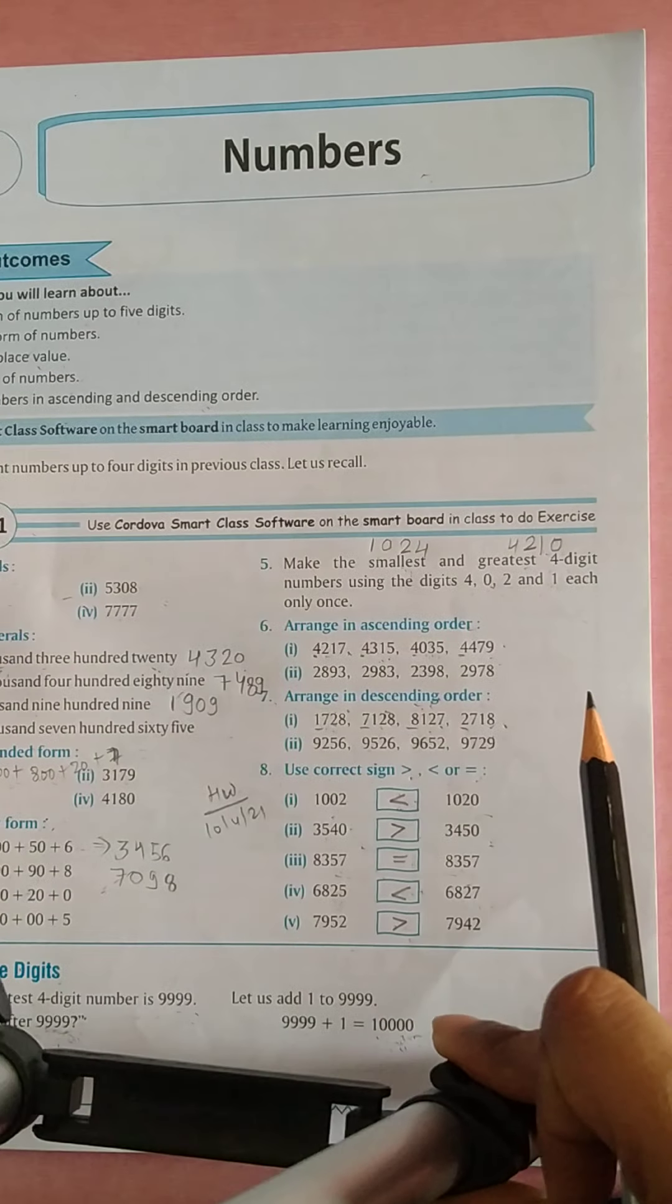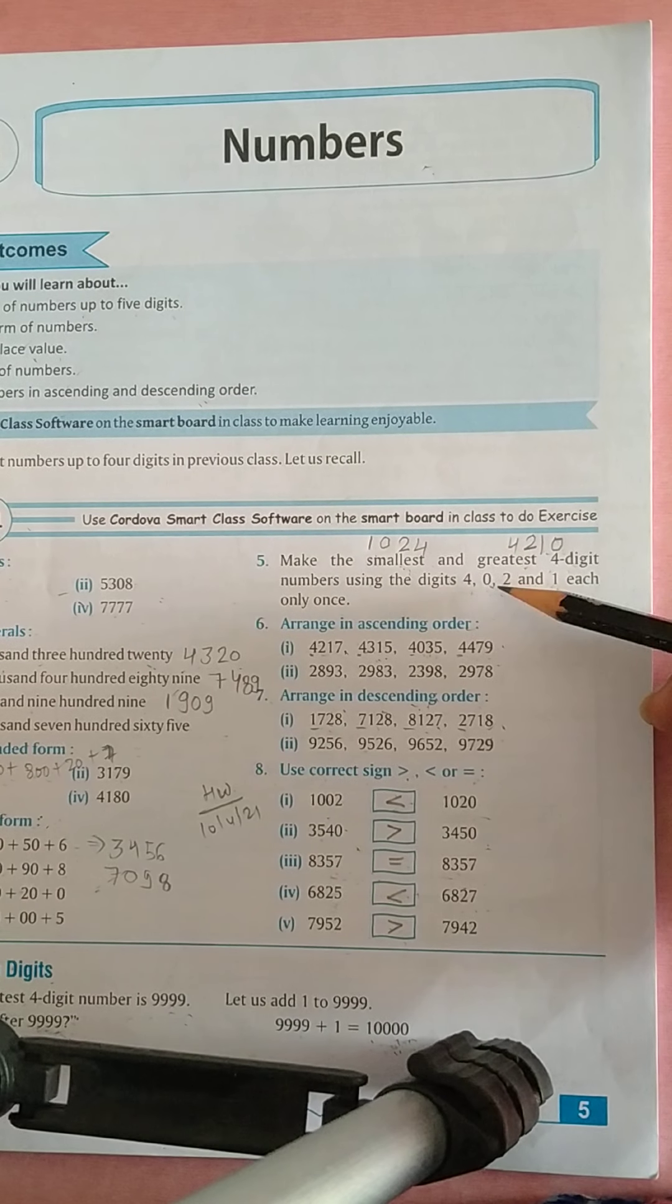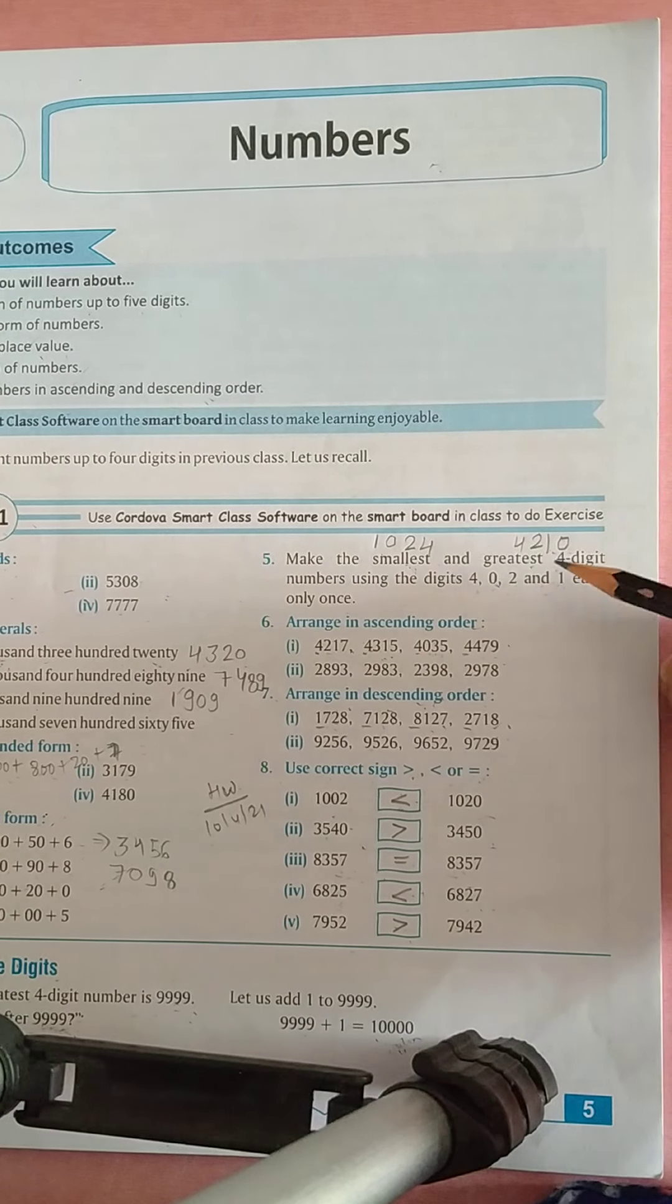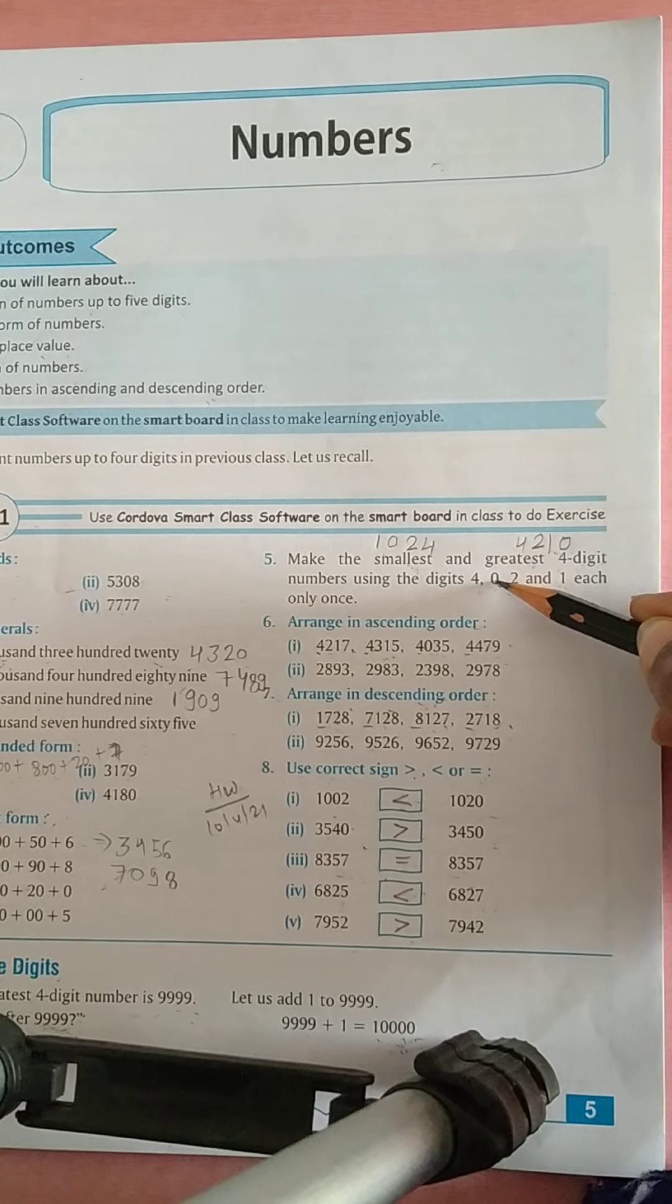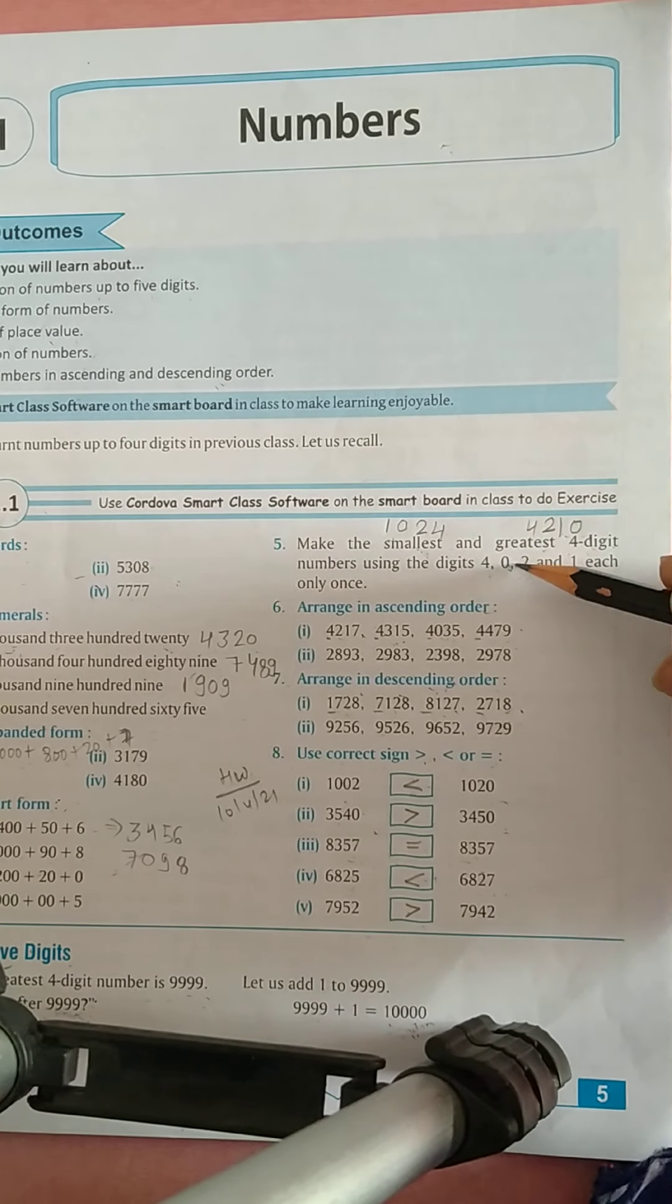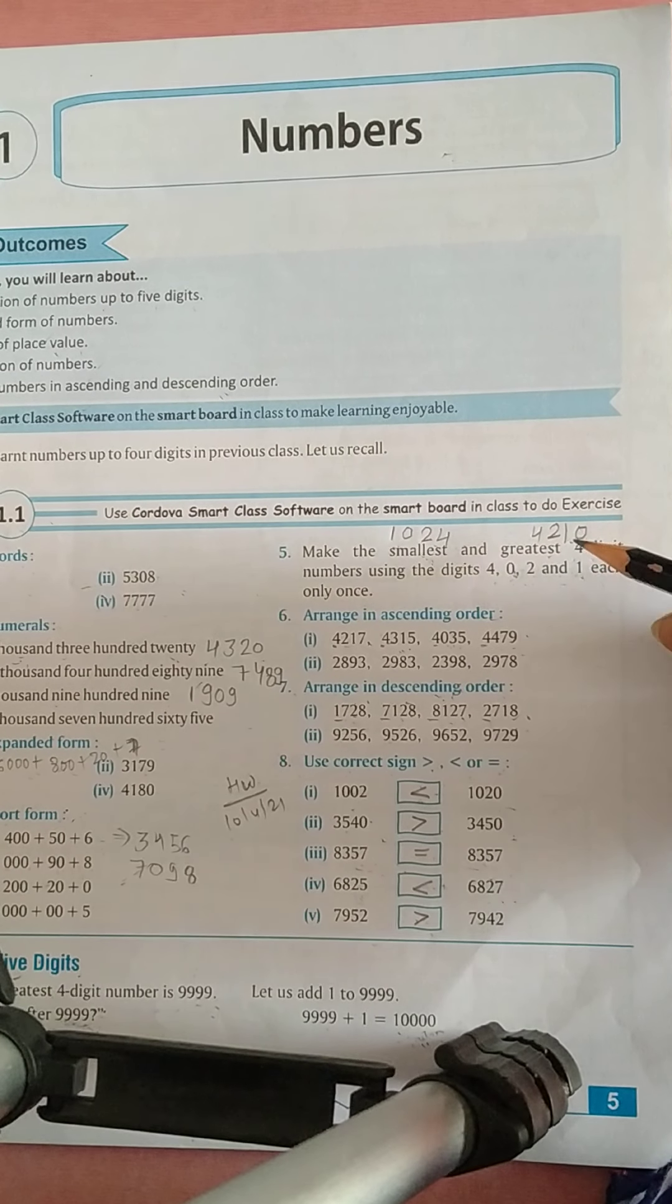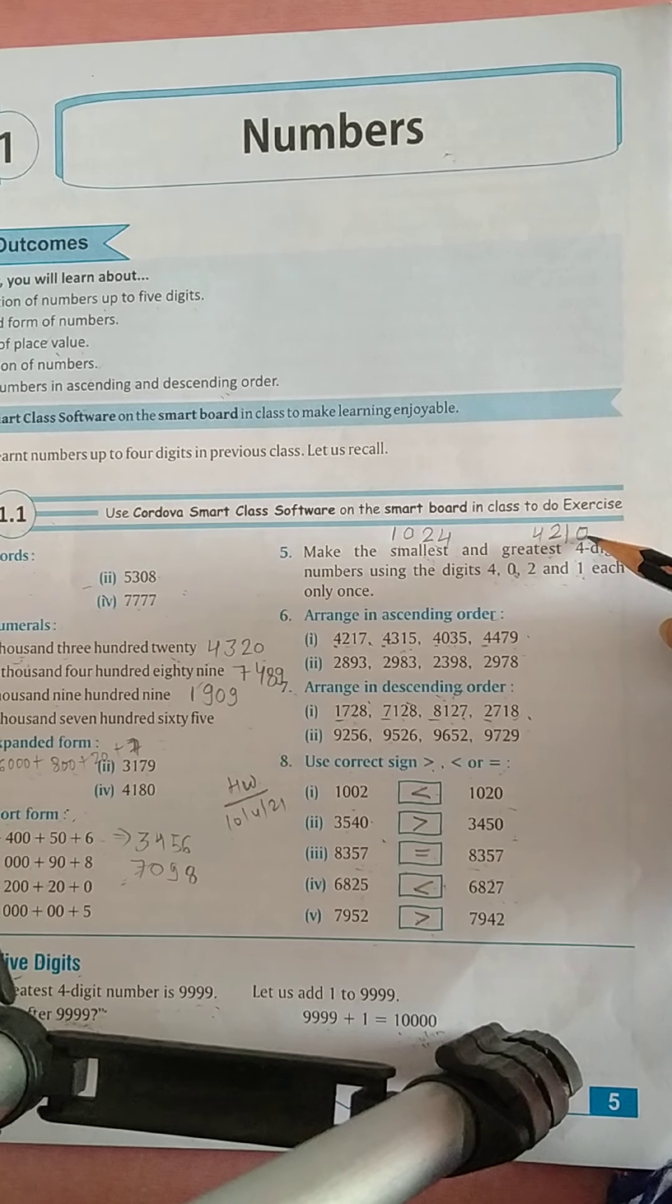Then question number 5, make the smallest and greatest 4 digit numbers using the digits 4, 0, 2 and 1 each only once. So यहां smallest number को write down करना है. इन digits का use करके smallest 4 digit बरानी है. So smallest digit is 0 here, but we can't write 0 in the starting. So the first digit will be 1, then 0, then 2 and then 4. So this is the smallest 4 digit number and greatest 4 digit number will be 4, then 2, then 1 and then 0.